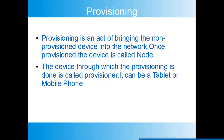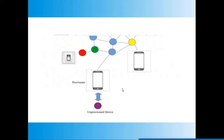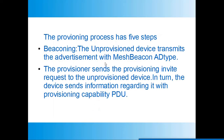Any device that supports the mesh protocol but is not yet part of the network is called an unprovisioned device. This device can be brought into the network using a procedure called provisioning. Provisioning is the act of bringing an unprovisioned device into the network; once provisioned, it is called a node. The device through which provisioning is carried out is called a provisioner — it can be a tablet or mobile phone running a provisioner app. The provisioning process has five steps.